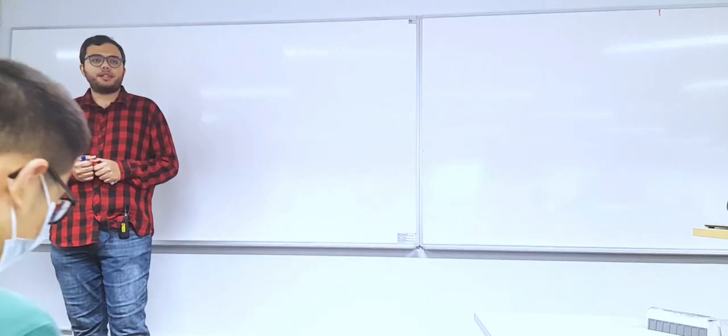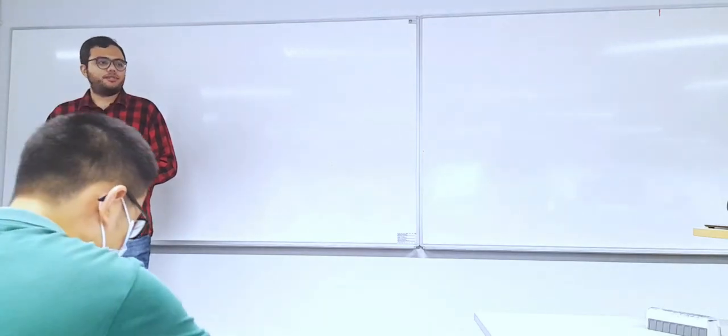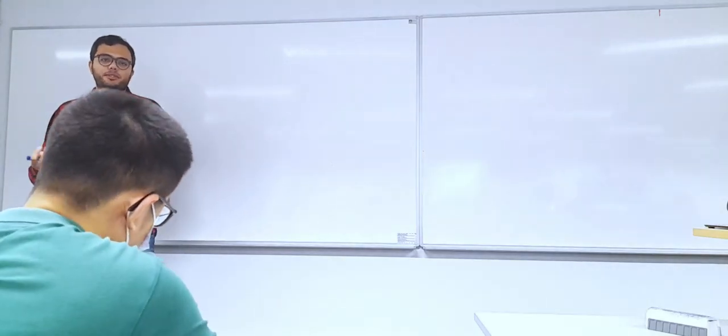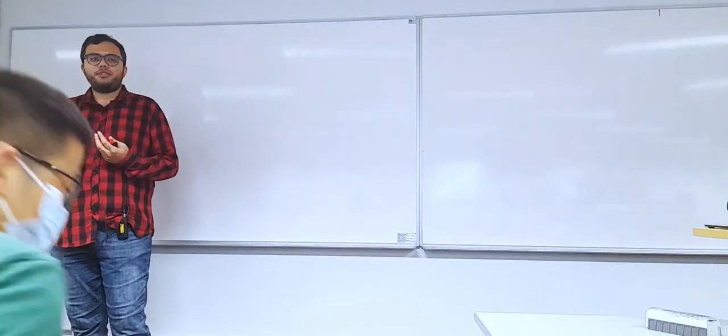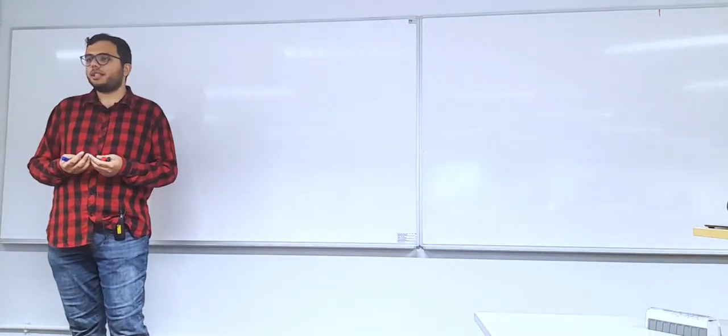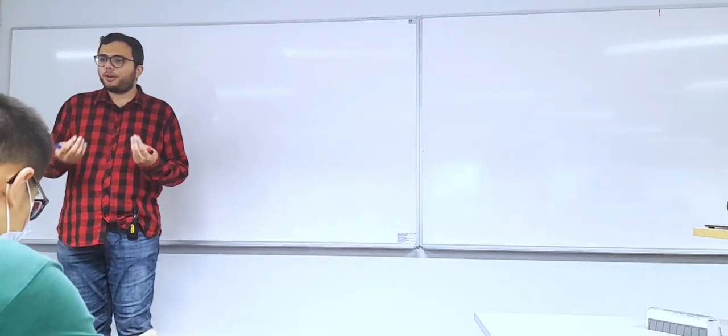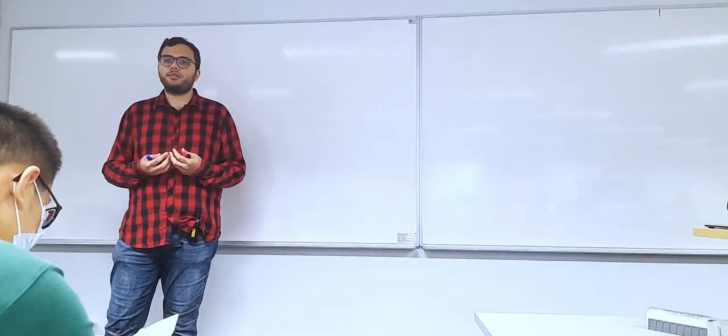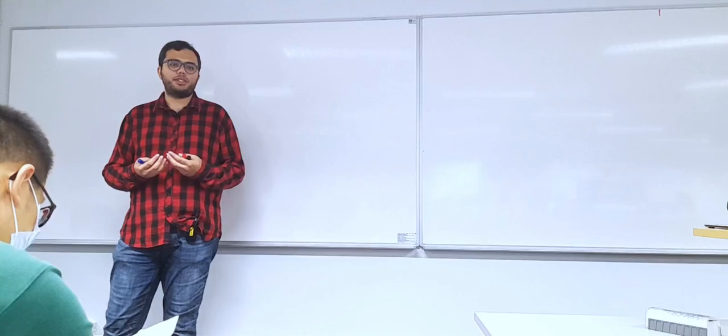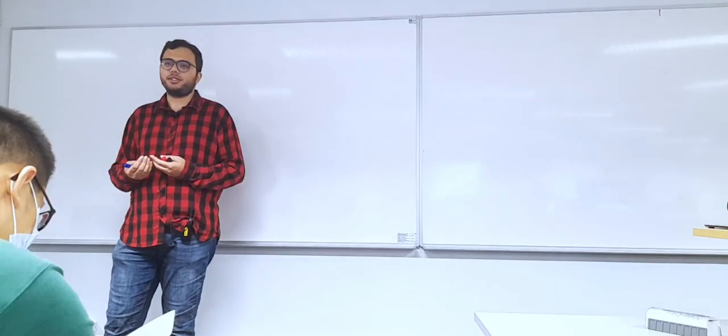We're going to see some examples of things that we can do using randomization that are not possible without it. In the previous sessions, we've seen, for example, a randomized version of quicksort, but it wasn't asymptotically faster than a non-randomized version. I'm going to start with an example where we actually need randomization and we can prove that randomization really reduces the runtime.